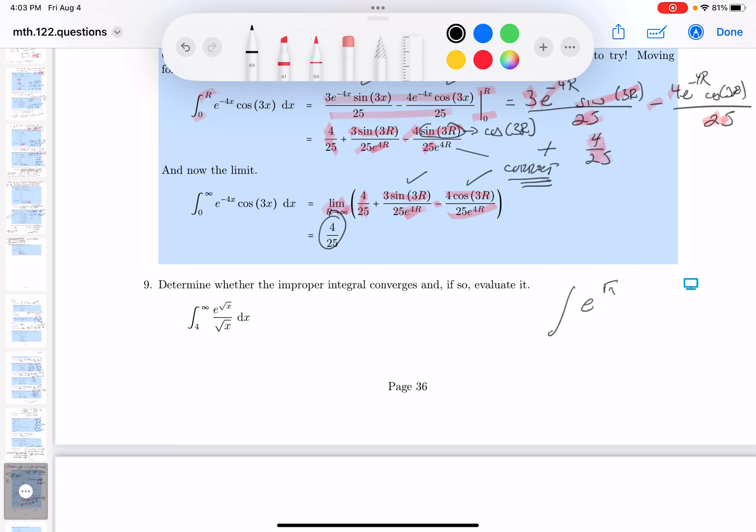You get e to the root x over root x dx. I'd probably say u equals the root of x. I want to point out this is x to the minus 1 half.